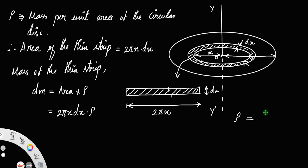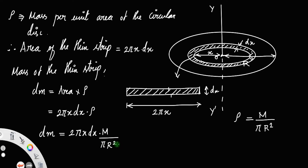The mass per unit area of the disk is total mass m divided by area of the disk, which is πr². Substituting, dm equals 2πx·dx times m divided by πr². Cancelling π, the equation becomes dm = 2m/r² · x·dx. Let us call that equation number 1.